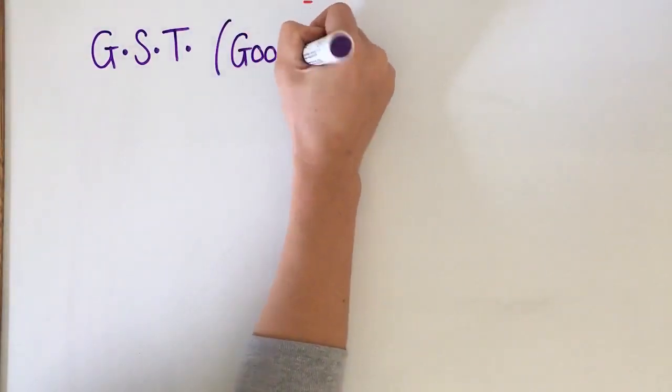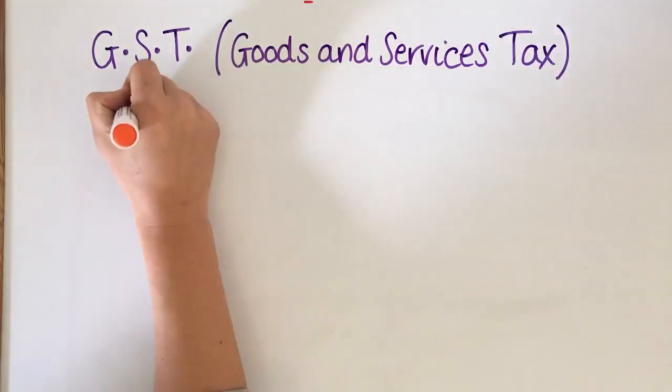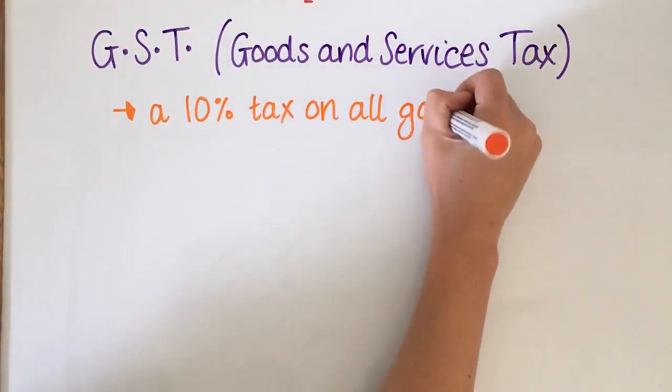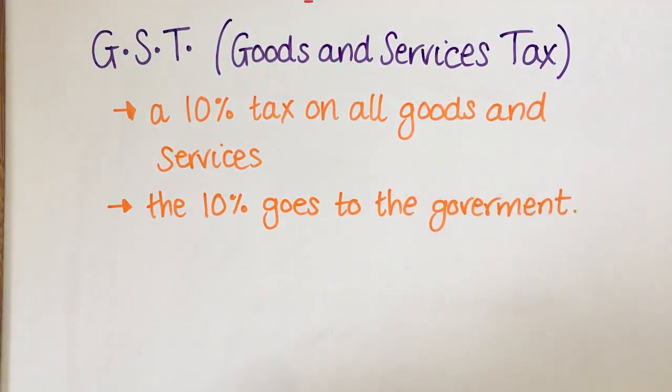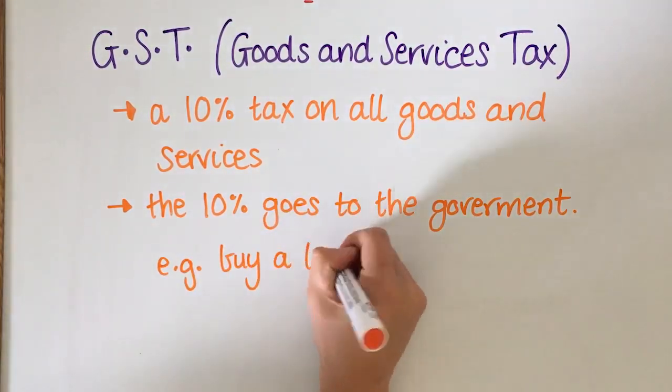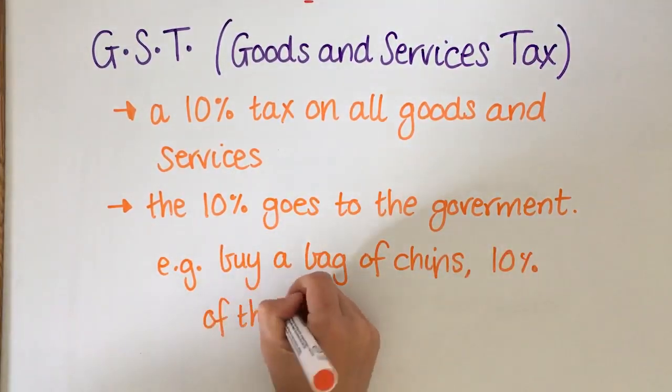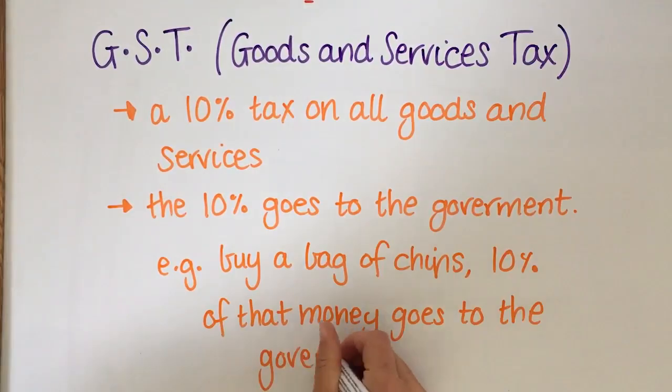So GST stands for goods and services tax. It's a 10% tax that's on all services and goods and it goes to the government. So if you buy something for $100, 10% of that $100 goes to the government.